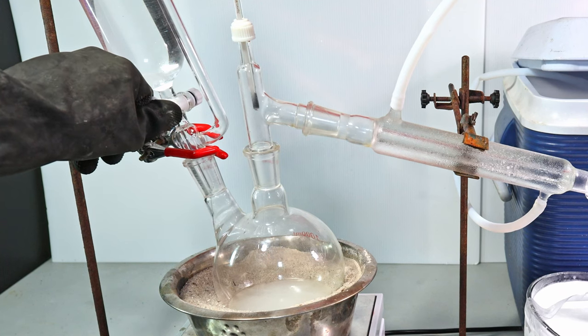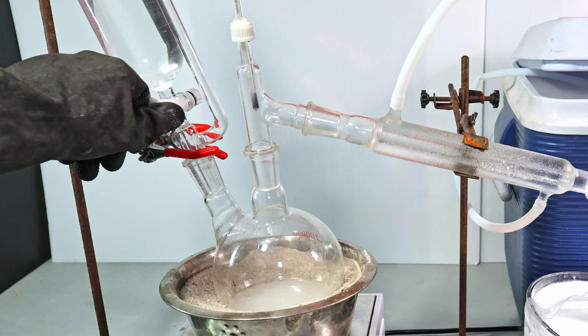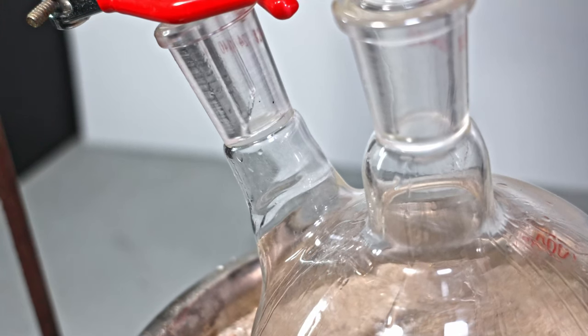It is important to drip the tert-butanol in slowly so dehydration can proceed quite rapidly without the interference of alcohol.